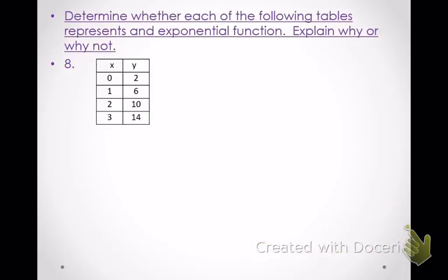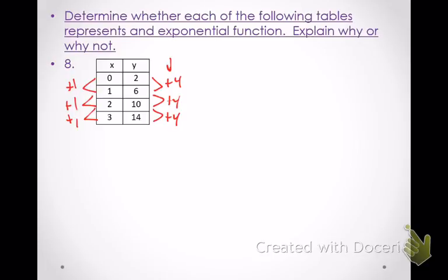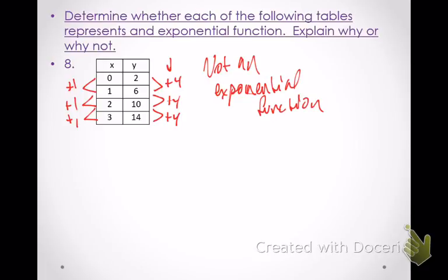Let's determine whether each table represents an exponential function. First, check x values — we're adding 1 every time, so there's a constant difference. Now look at y values: if I add 4 to 2, I get 6; add 4 to 6, I get 10; add 4 to 10, I get 14. That's a constant difference, which means if we graph this it gives a line — so this is not an exponential function. It's actually a linear function.